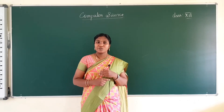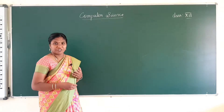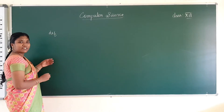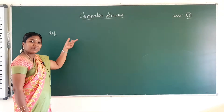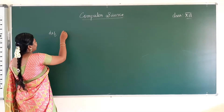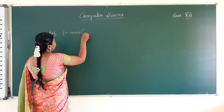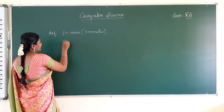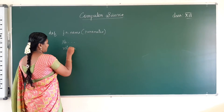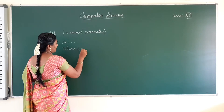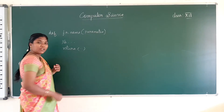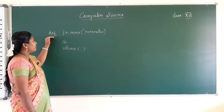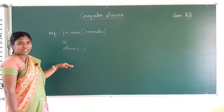In the last video we learned the user defined function. To create a user defined function, we use the keyword 'def'. First we start the function with 'def', then give our function name, then brackets — if we want we can give parameters — then our statements, and then the return statement. In return, we can give a value or we need not.